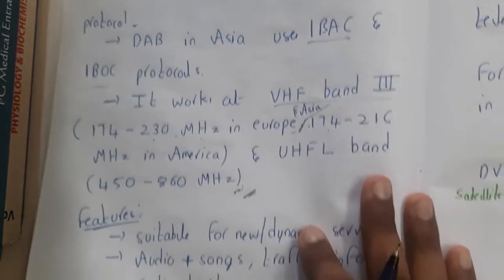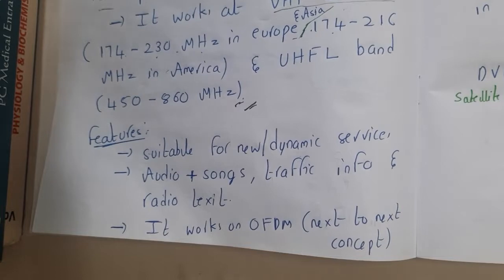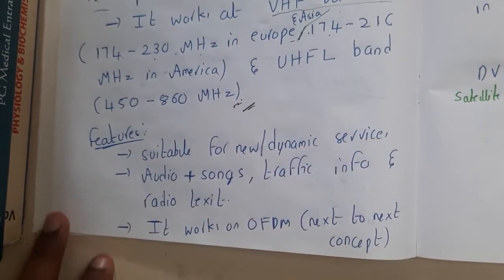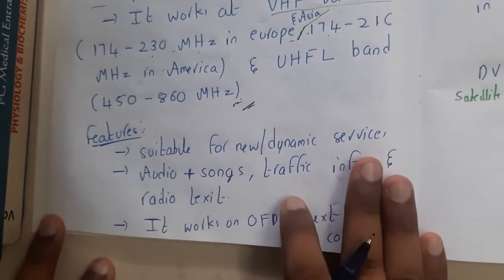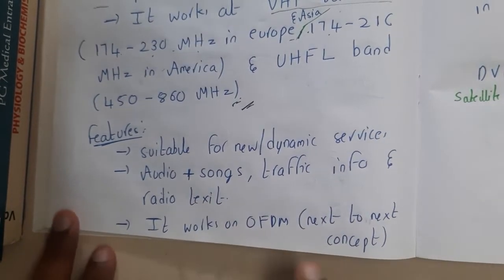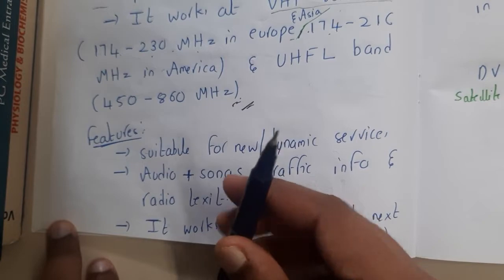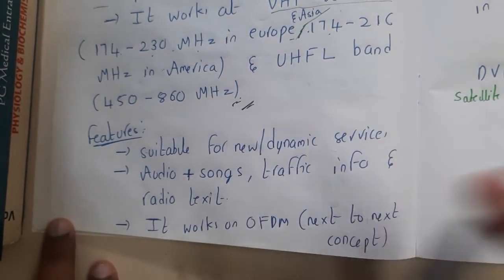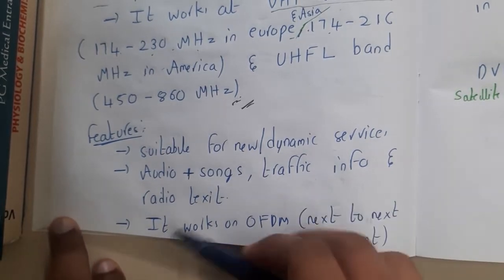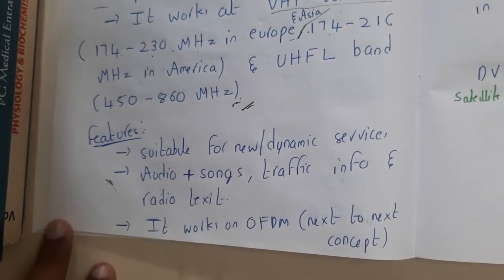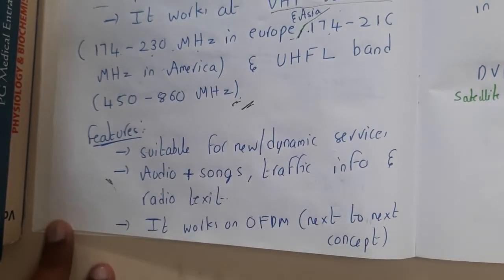The features of DAB are that it is suitable for new and dynamic services. You can use DAB to start an audio service. It can be used for audio, songs, traffic information, and radio text. In your radios — like 99.5 FM — you listen to songs, conversations, call talks, and traffic information, and all of this is possible because of DAB when used worldwide. Local stations may use ground wave propagation or other methods.